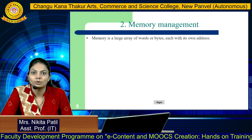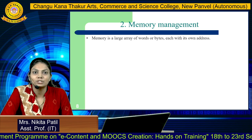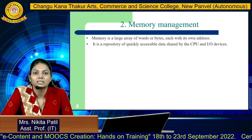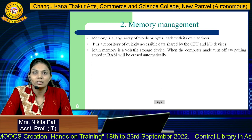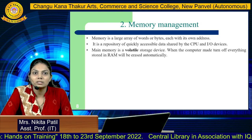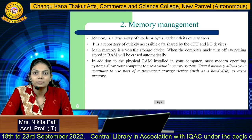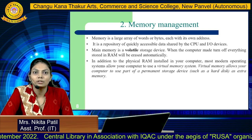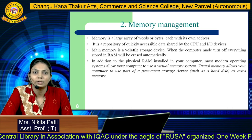Memory management: memory is a large array of words or bytes, each with its own address. It is a repository of quickly accessible data shared by the CPU and input devices. Main memory is a volatile storage device — when the computer is turned off, everything stored in RAM will be erased automatically.